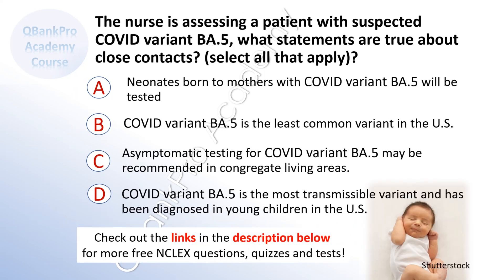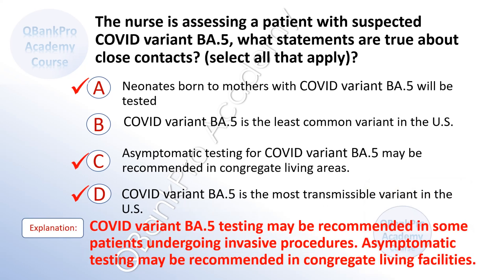The nurse is assessing a patient with suspected COVID variant BA5. What statements are true about close contacts? A. Neonates born to mothers with COVID variant BA5 will be tested. B. COVID variant BA5 is the least common variant in the U.S. C. Asymptomatic testing for COVID variant BA5 patients may be recommended in congregate living areas. D. COVID variant BA5 is the most transmissible variant and has been diagnosed in young children in the U.S. The correct answers are A, C, and D.